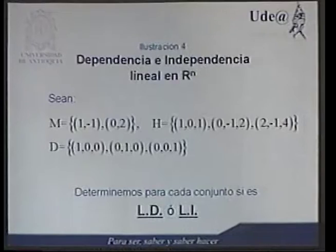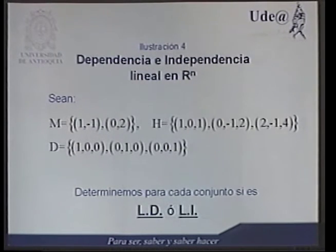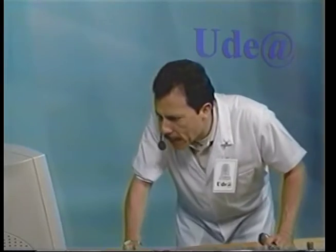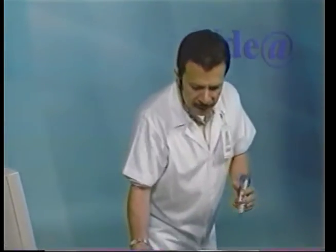Volvamos a nuestra ilustración número 4, que corresponde al concepto de dependencia e independencia lineal en Rn. Sean M el conjunto formado por las dos parejas indicadas, H el conjunto de tripletas indicadas y D el conjunto formado por las tripletas también indicadas. Determinemos para cada conjunto si es linealmente dependiente o linealmente independiente.